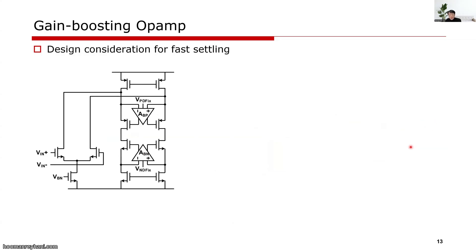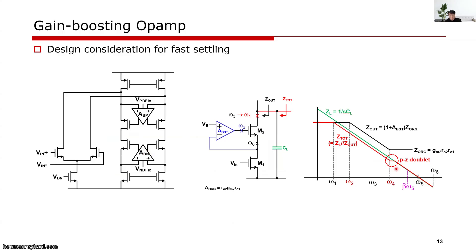In multi-stage amplifiers, the pole-zero doublet becomes a problem. As long as the supply voltage is sufficient, we can design a single-pole op-amp by stacking transistors or by adding a gain-boosting loop. One caution with the gain-boosting loop is the pole-zero doublet, similar to the earlier case. To make a gain-boosting amplifier for fast settling, we need to avoid this pole-zero doublet within the unity loop gain frequency. The details will be discussed in the course.